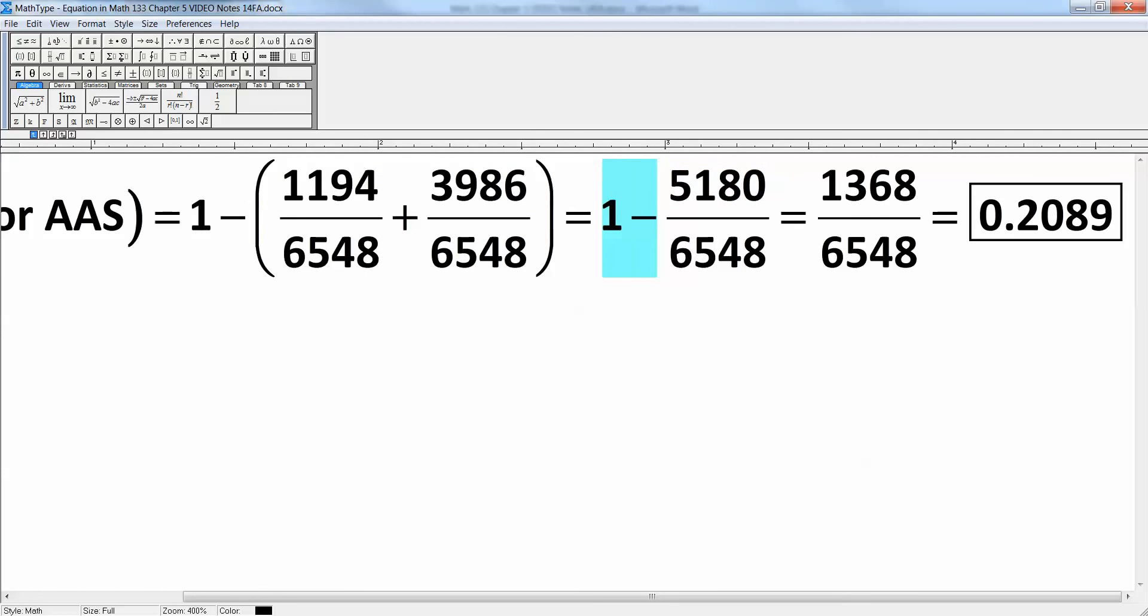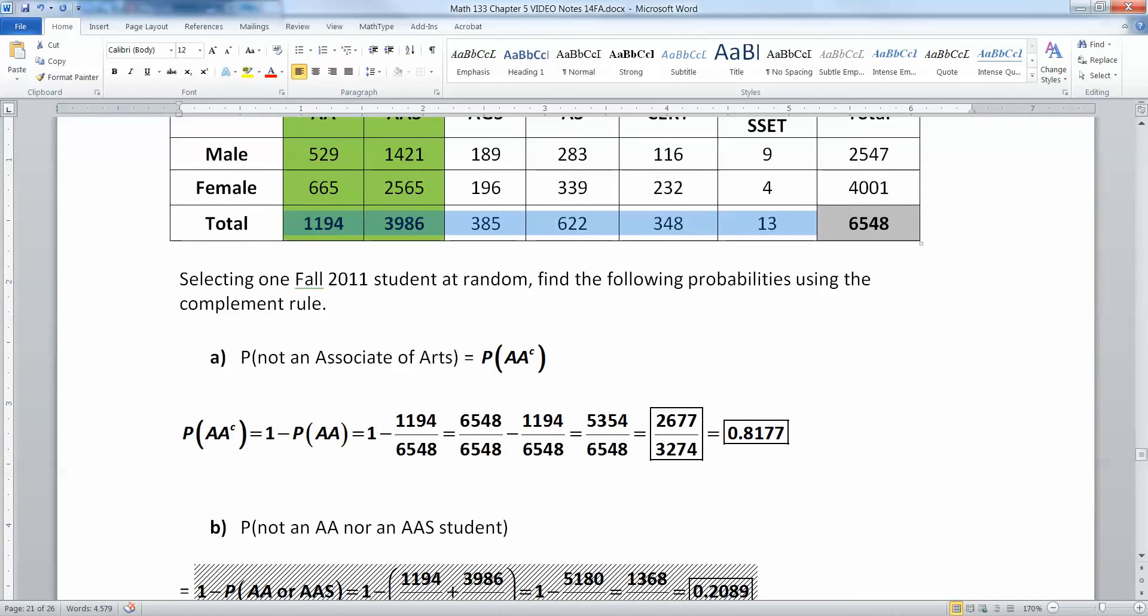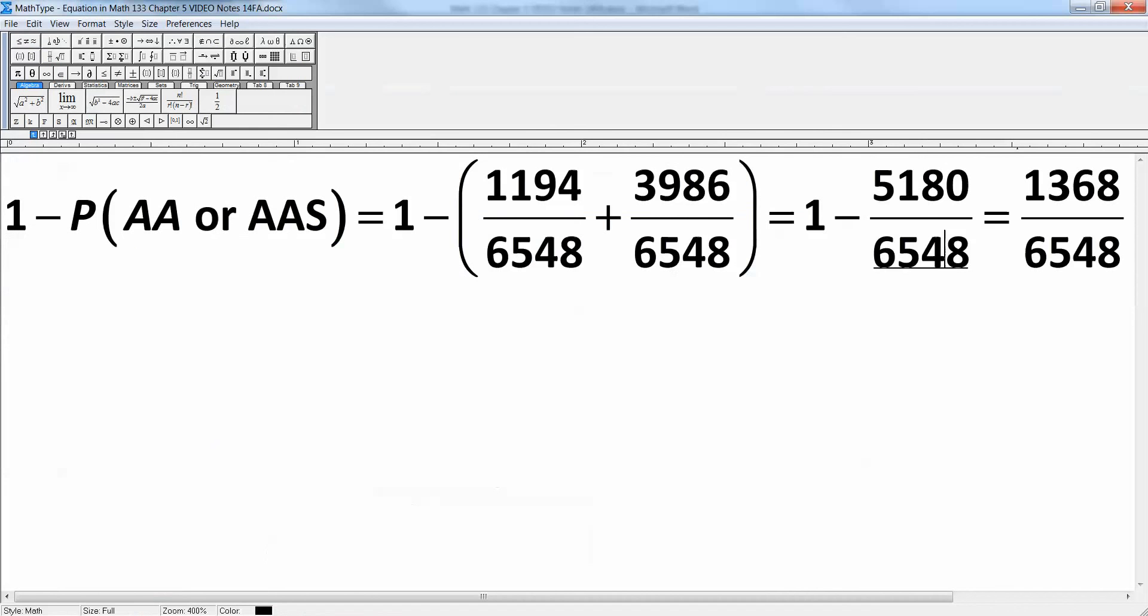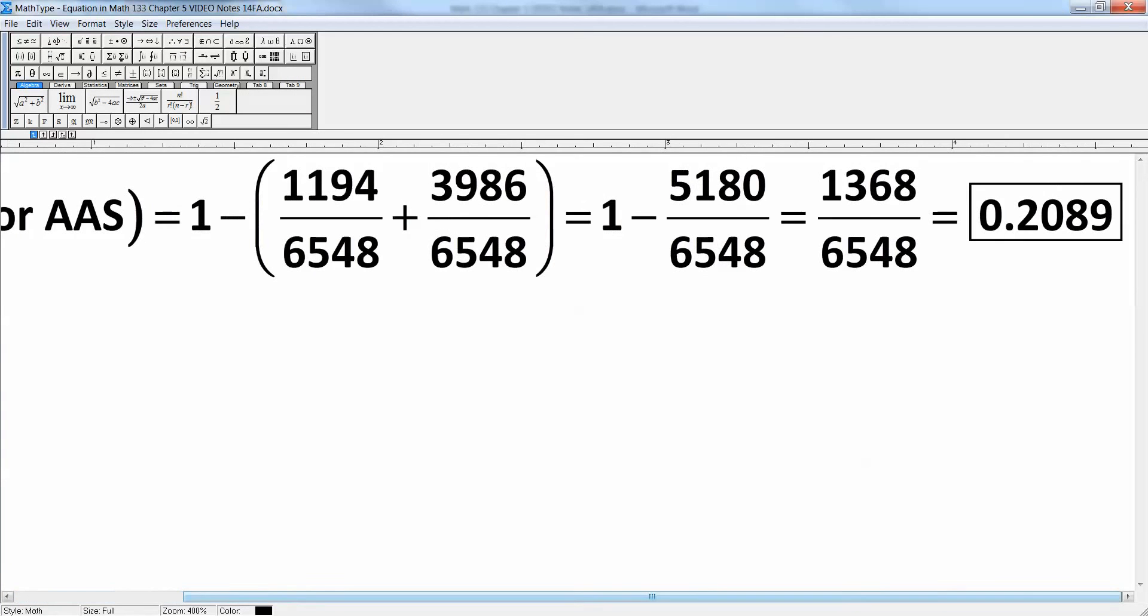Then I want to take it away from 1. But remember, that means you really end up subtracting from 6,548. Because if you look at the table, all these numbers here have to add up to 6,548. So if you take the green ones away, you'll have what the white ones add up to. So that would make 5,180 over 6,548. And then if I take 6,548 take away 5,180, I'll have 1,368. And then if you divide that by 6,548, you get about 0.2089.